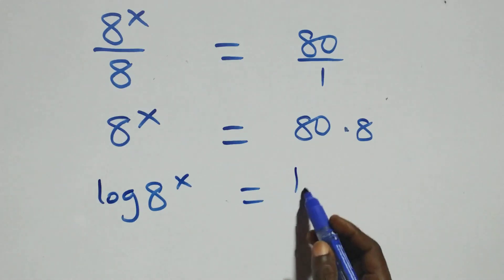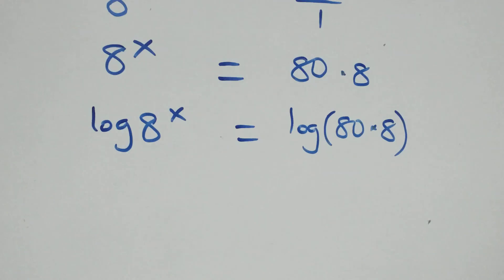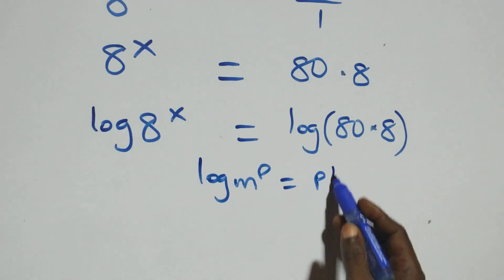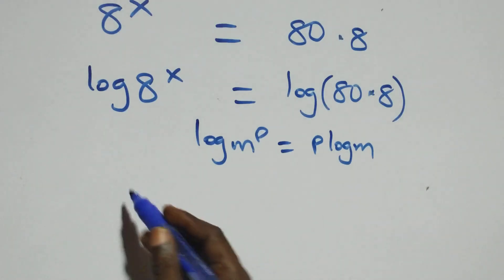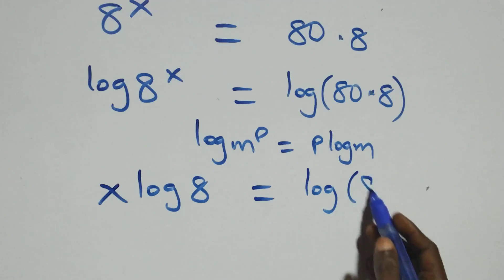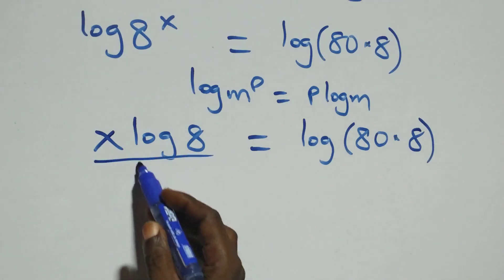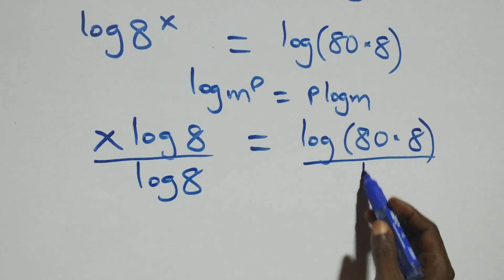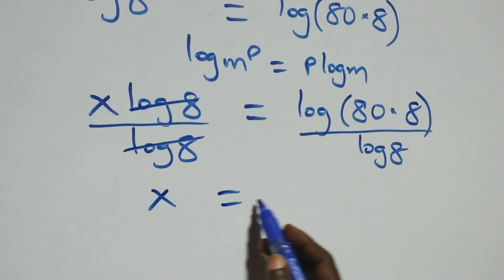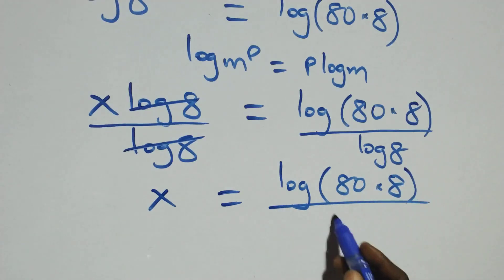The next step, we take the log on both sides. We have log 8 raised to power x equals log of 80 times 8. Then we apply the power rule of logarithms: log m raised to power p is the same as p log m. This becomes x log 8 equals log of 80 times 8. We then divide both sides by log 8, and log 8 cancels, leaving x equals log(80 × 8) over log 8.